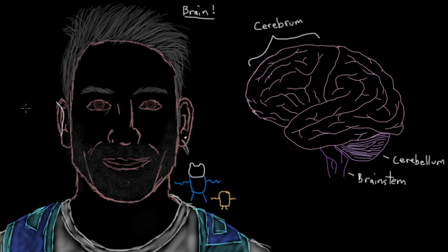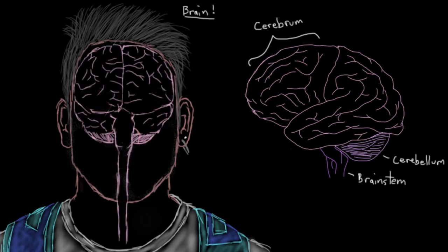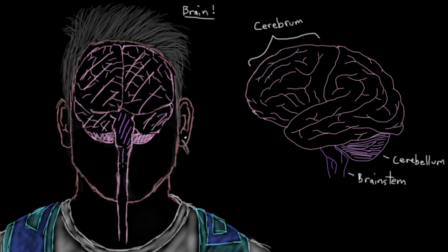Now let's look at what the brain looks like sitting in your skull — this is what we call an anterior view, looking at it from the front. To correlate with the side view: everything outlined in pink is the cerebrum, the light purple down here is the cerebellum, and in proper purple, this is the brain stem, which you can see turns into the spinal cord nicely down below.